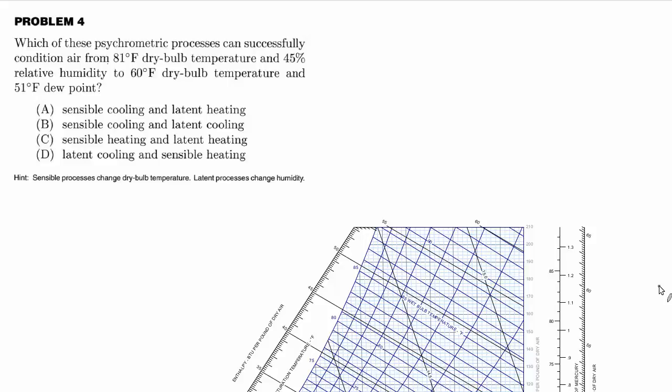Which of these psychrometric processes can successfully condition air from 81°F dry bulb temperature and 45% relative humidity to 60°F dry bulb temperature and 51°F dew point? And they want to know if it's sensible or latent cooling and sensible or latent heating.